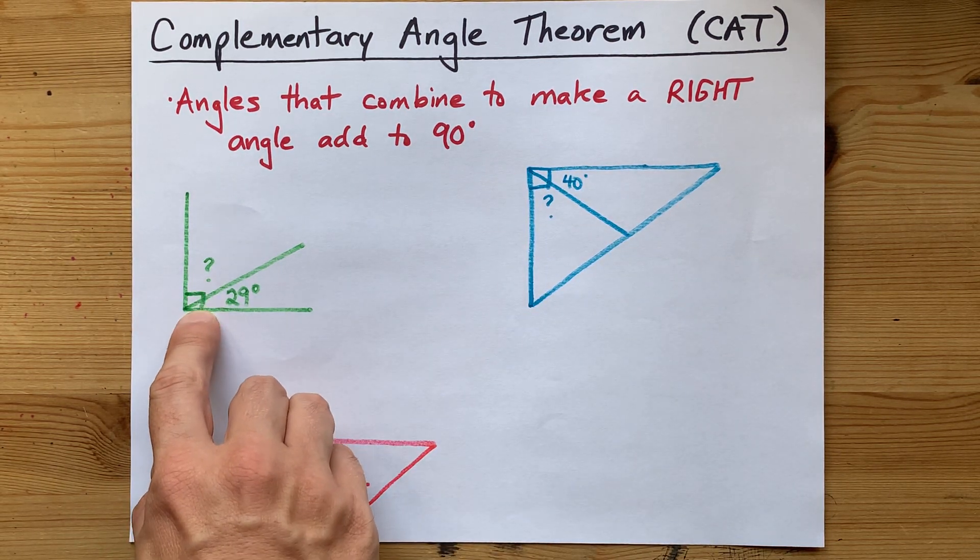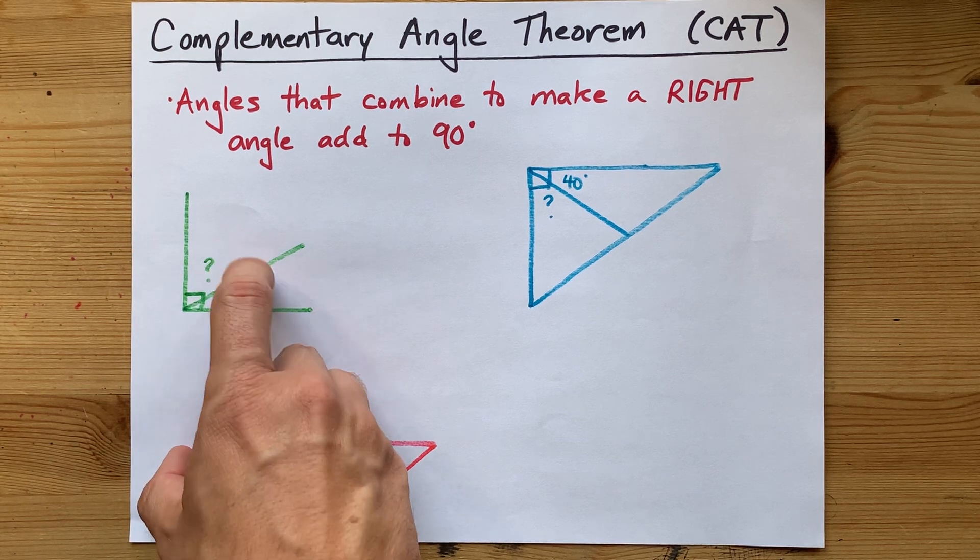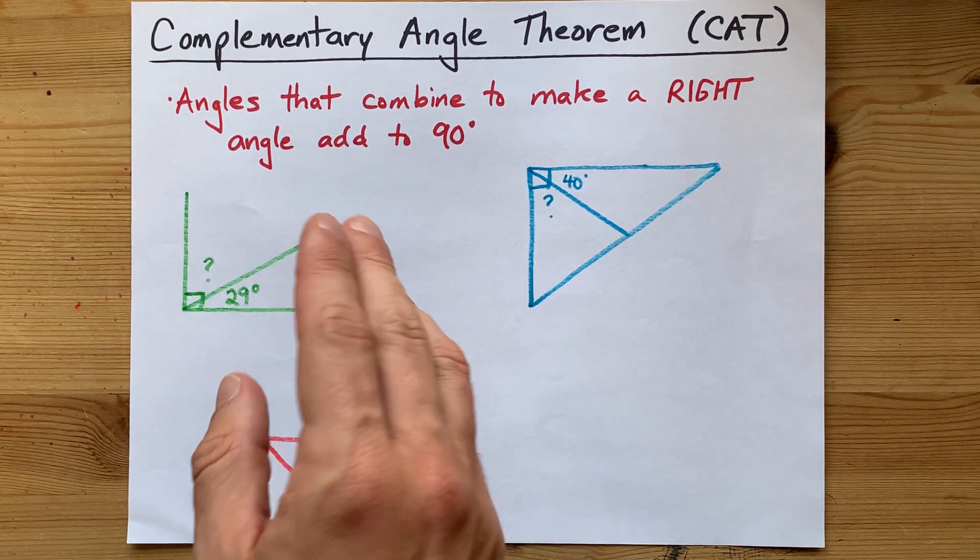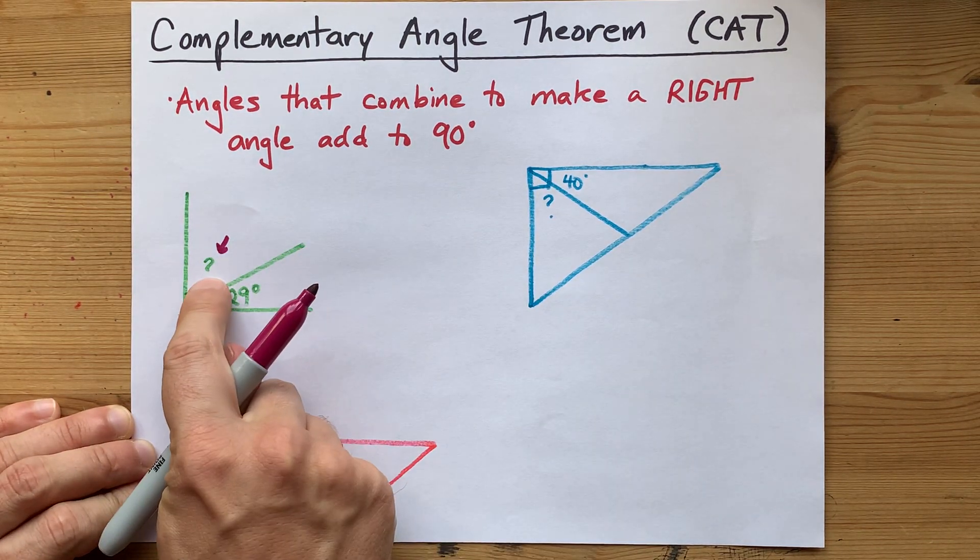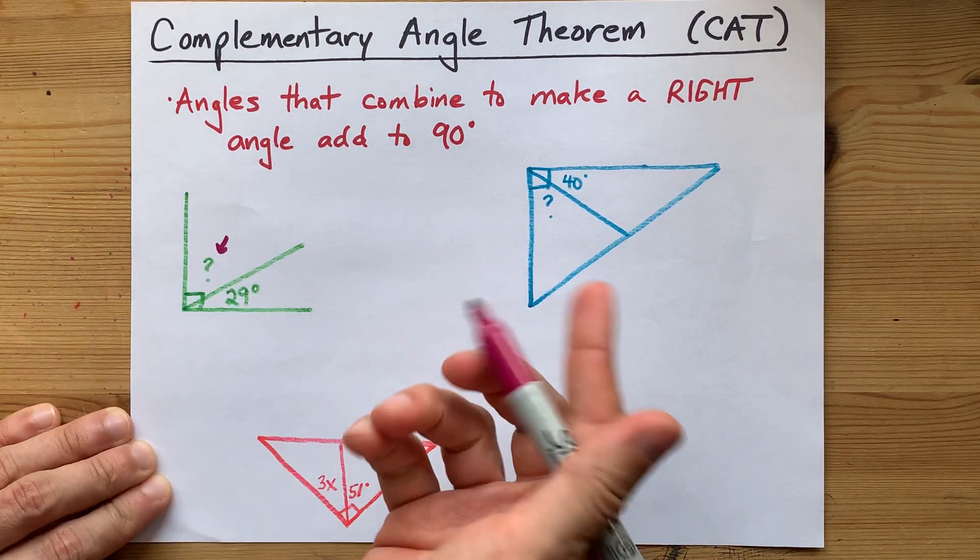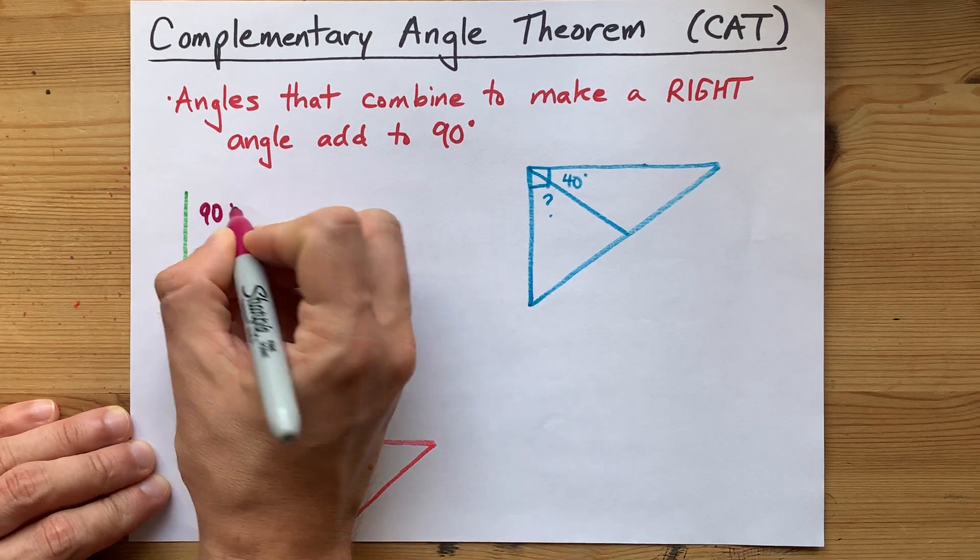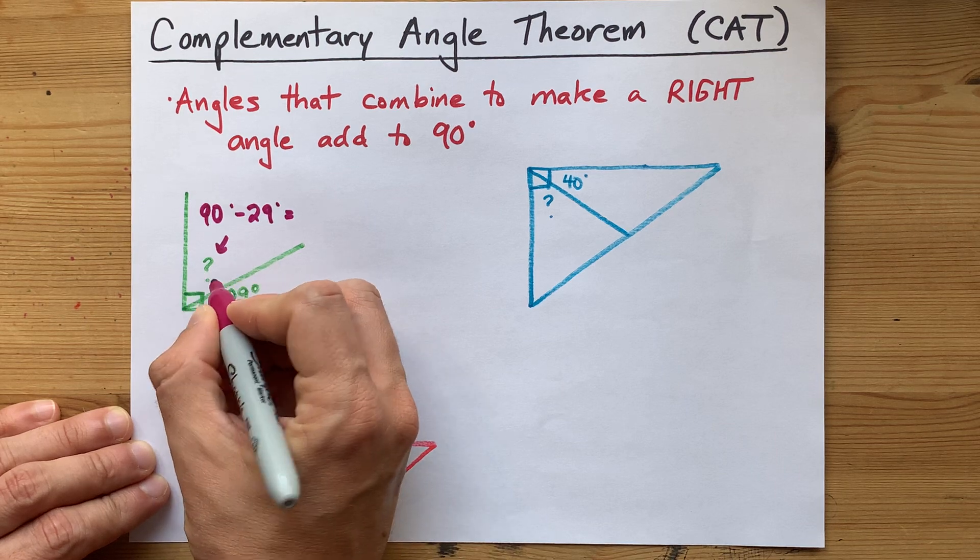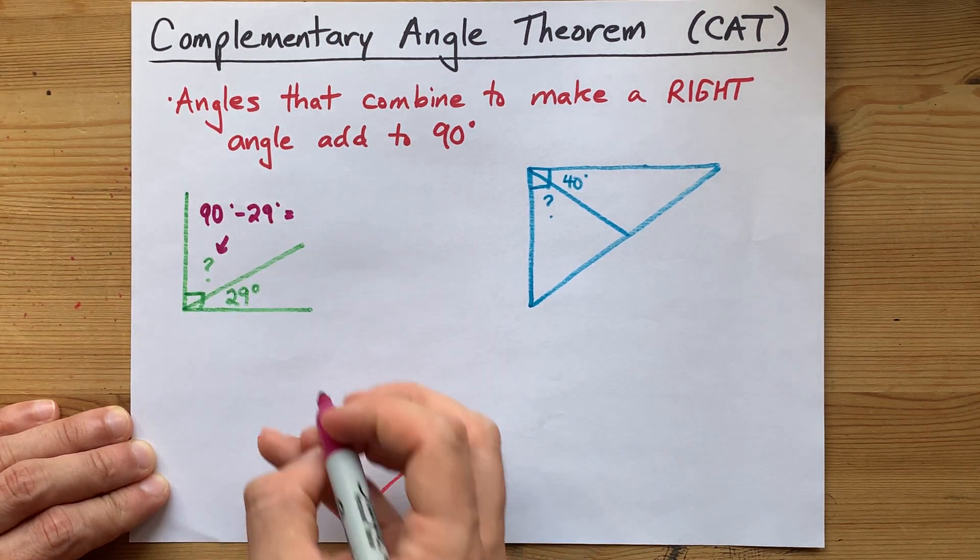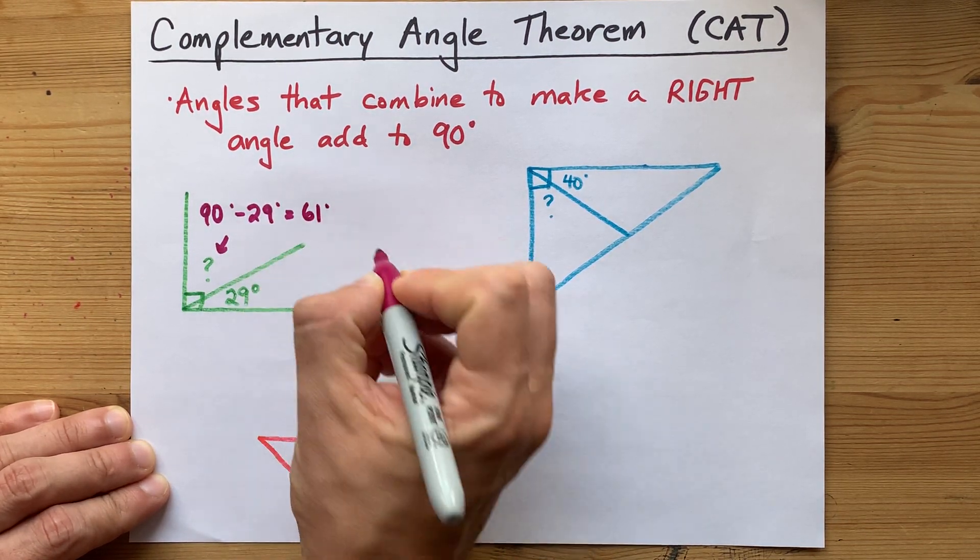Here you're told that that is a 90 degree angle, so these two angles combined had to have made 90 degrees. How big is that angle labeled with the question mark? Well, you can take 90 degrees and then take 29 away from it to get what was left over here. 90 minus 29 is 61 degrees.